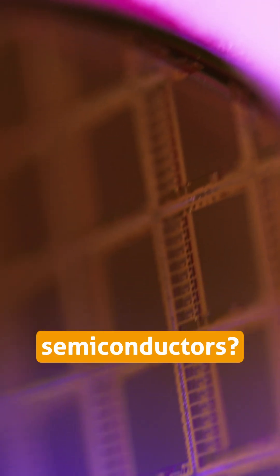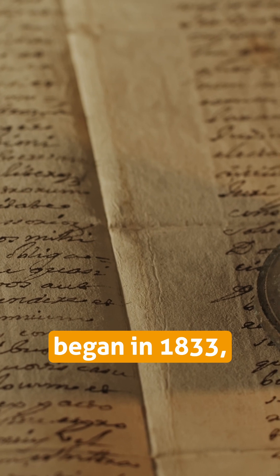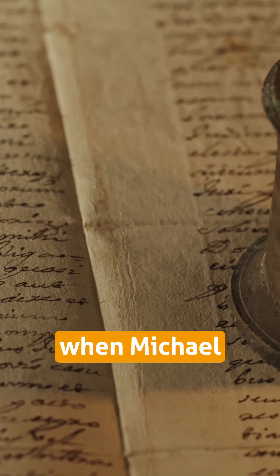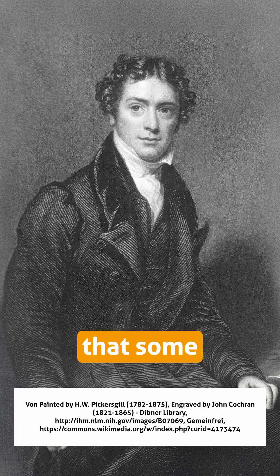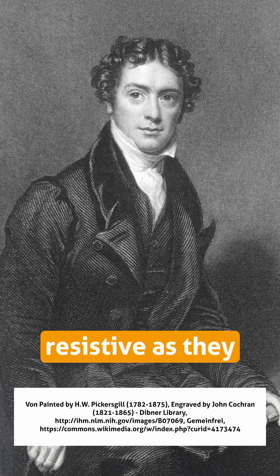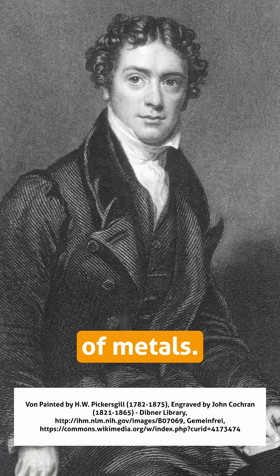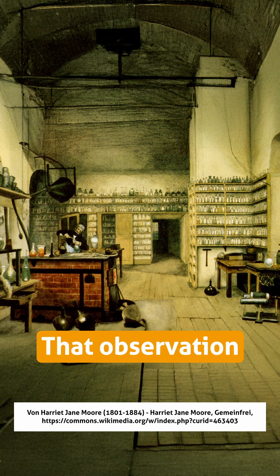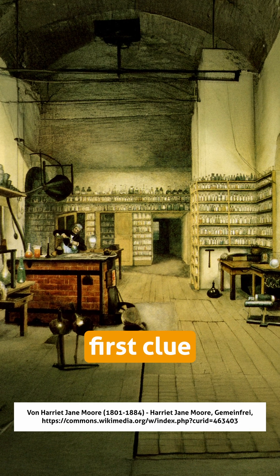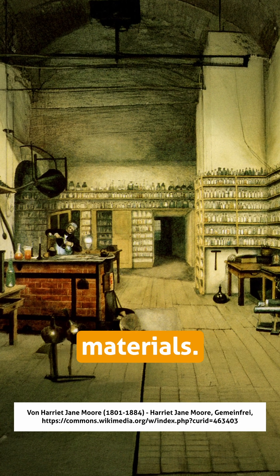How Humanity Discovered and Mastered Semiconductors. The story of semiconductors began in 1833, when Michael Faraday noticed that some materials become less resistive as they heat up — the opposite of metals. That observation was the first clue to a new class of materials.